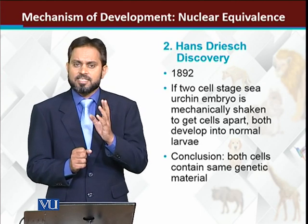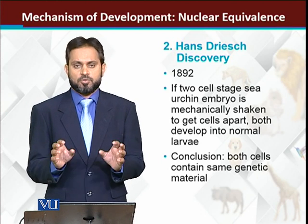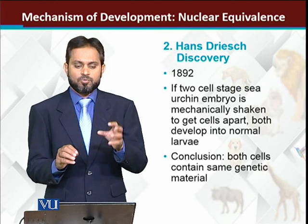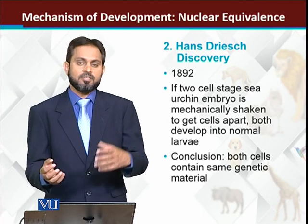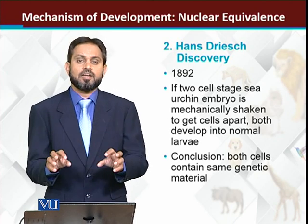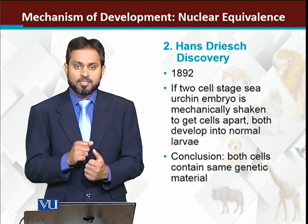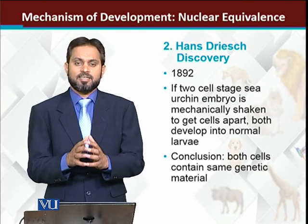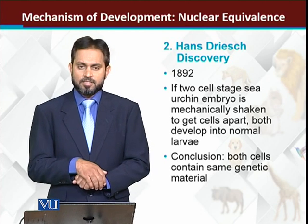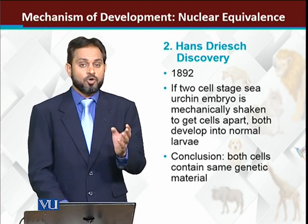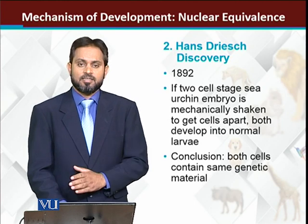Now the concept that as the cell divides, half the genome goes to one cell and half to the other — that concept was abolished here. Because if that concept were correct, both cells should have formed only half-larvae, with half the organs in one larva and half in the other. But both embryos developed into normal larvae, and two complete sea urchins were formed. This finished the concept that during development, different genome fragments go to different cells — meaning all cells receive the same complete genome.